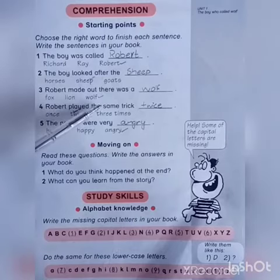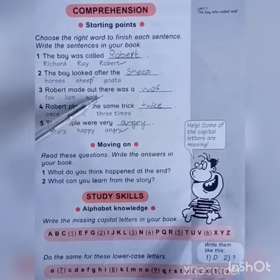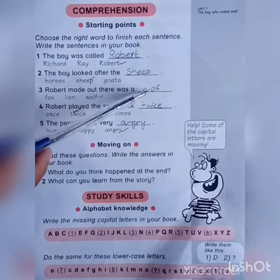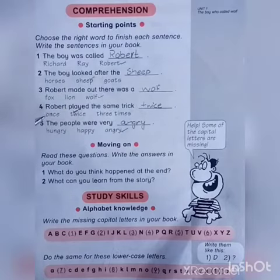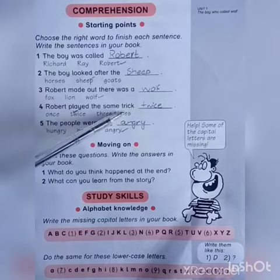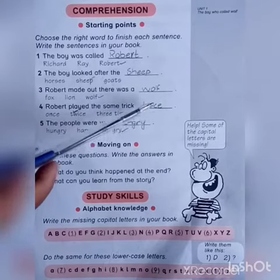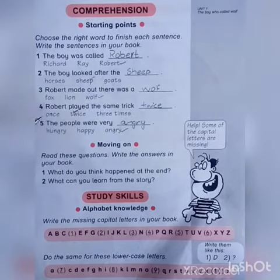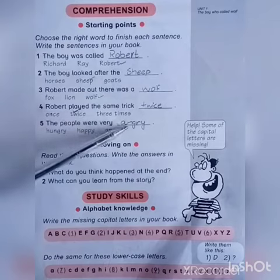As you know, there was a wolf in the story, so you have to take this one and write it here. Number four: 'Robert played the same trick how many times — once, twice, or three times?' It was twice, so the right answer is twice and you have to write it here.